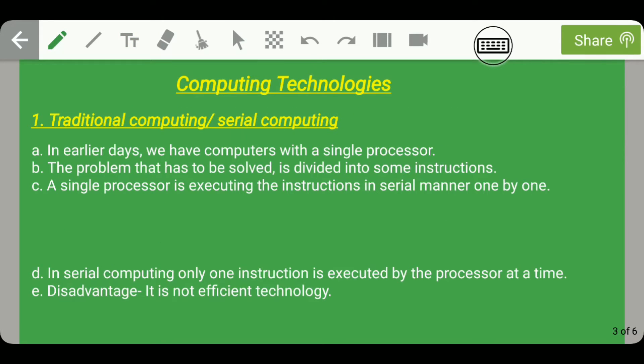Till now we have seen various storage technologies. Now we will talk about various computing technologies. Using storage technologies we are able to save data into the computer. After saving data, the computer has to do some computing according to user instructions, that is according to the program. This computation is of various types: serial computing, which was used in earlier days; then parallel computing; then distributed computing; and nowadays cloud computing. We will see all these types one by one in detail.